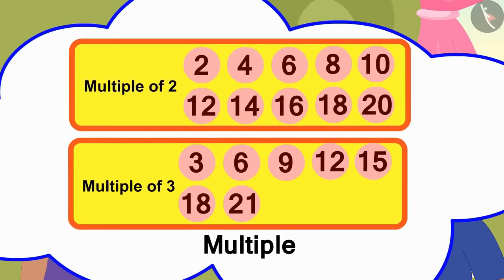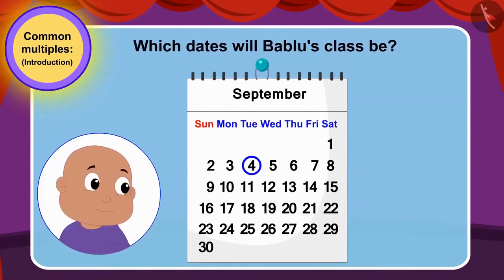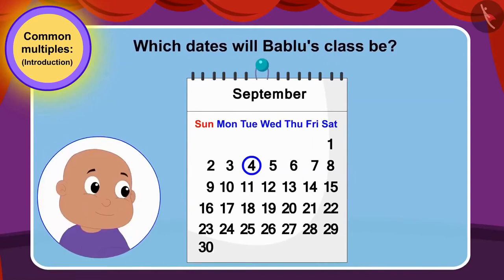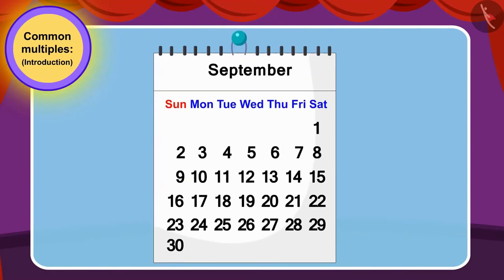Children, you remember the multiples learnt in the previous lesson, don't you? Can you use multiples of four to indicate on which dates will Bablu's class be? If you want, you can stop the video and find the answer. Well done, children. Your answer is absolutely correct.